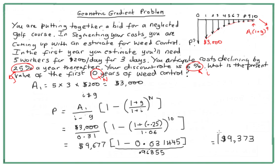So what we found is that if you have a situation where you're paying costs associated with a piece of property and you expect them to decrease over time, you can come up with an estimate of the present value. If you don't already own the property, you can build that into your bid. That's a geometric gradient problem with a negative g. Most problems in the textbooks tend to be increasing, so I thought it was worth doing a decreasing gradient example for a change.